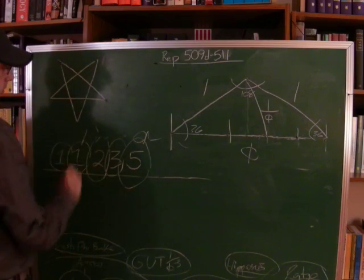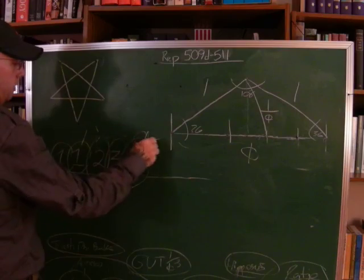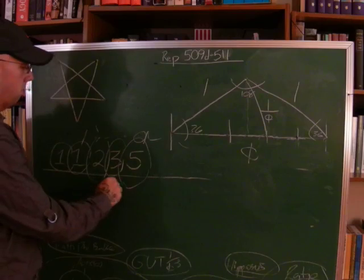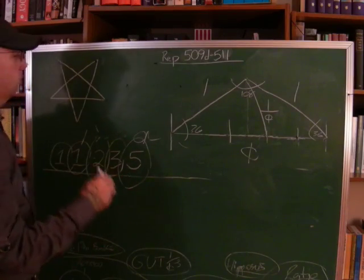So we have monad, nous, chaos, hyle, and on, or as I've called it with five M's: monad, mind, magnitude, matter, and man, i.e. being, or on.